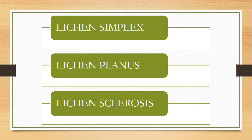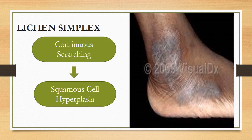Lichen simplex is the simplest one. If you have any continuous scratching or rubbing, it will ultimately lead to squamous cell hyperplasia and the skin will have a lichenified appearance. That is why it is called lichen simplex — it simply forms because of continuous scratching, rubbing, or a continuous injury phenomenon.